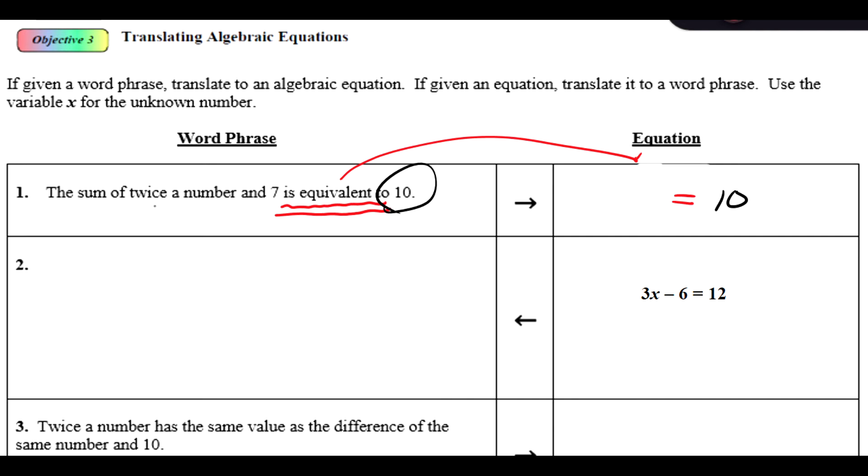Now the left side is talking about the sum of twice a number and 7. So when I take this apart, the sum of is representing an addition, and then it just lists the two things that I'm adding. Twice a number is the first, so twice a number is two times a number or 2x, and then 7 would be the second.